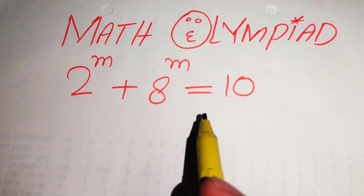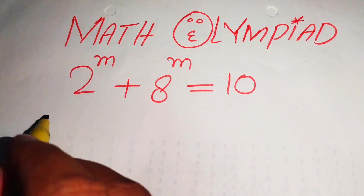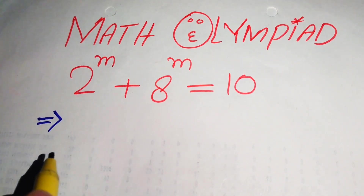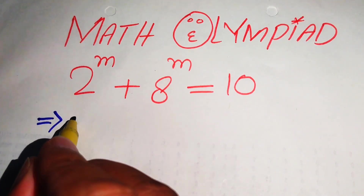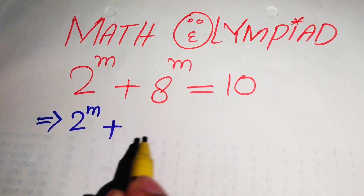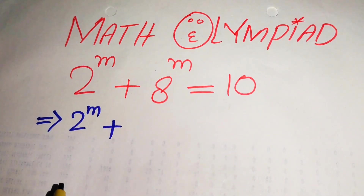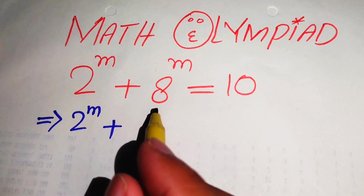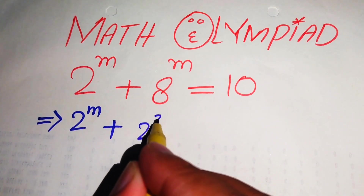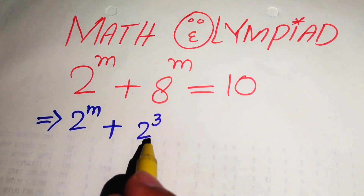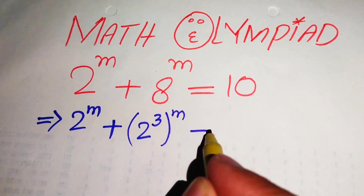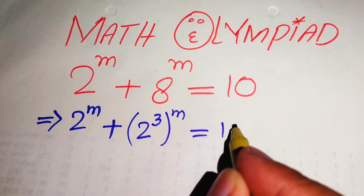The very first thing we are going to do is rewrite this equation as 2 to the power of m plus — here we make the prime factors of 8. We know that the prime factors of 8 are 2 cubed, so 2 cubed equals 8, and its whole power m equals 10.